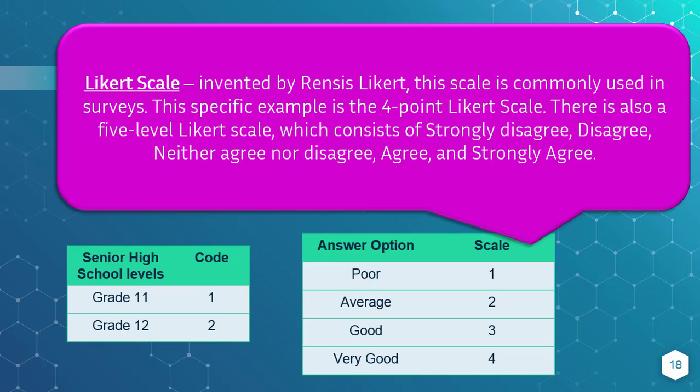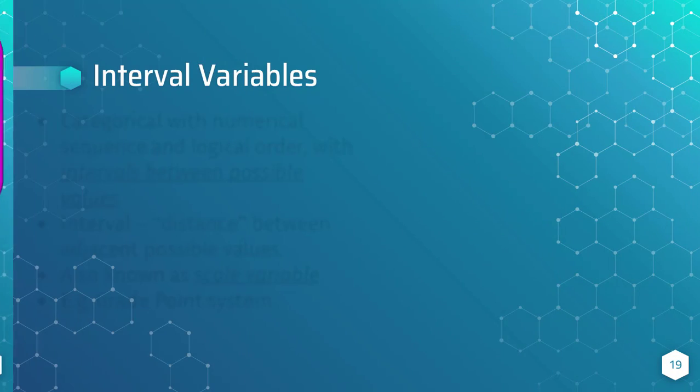This specific example is a four-point level Likert scale. There is also a five-level Likert scale, which consists of: strongly disagree, disagree, neither agree nor disagree, agree, and strongly agree.